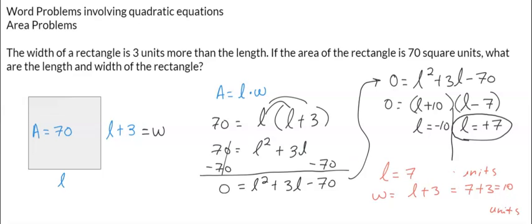Just to recap: the width will be 10 units—7 plus 3—and the length is already 7 units. So when you have 7 units times 10 units, it gives you 70 square units.